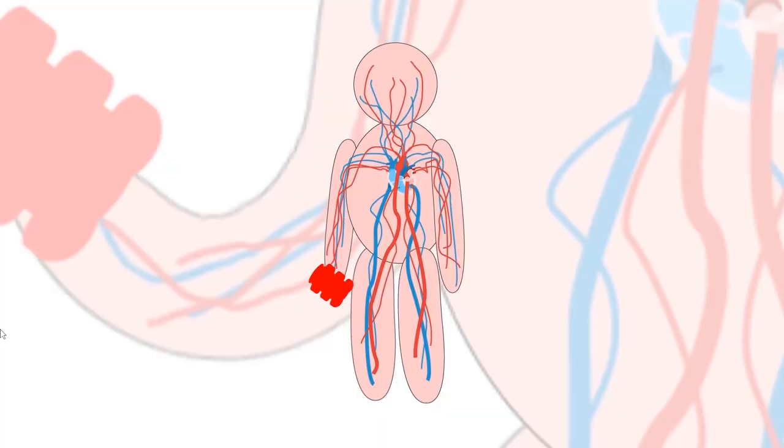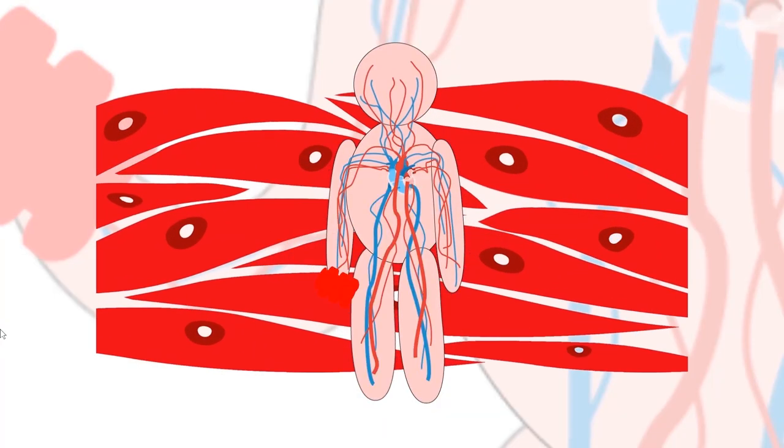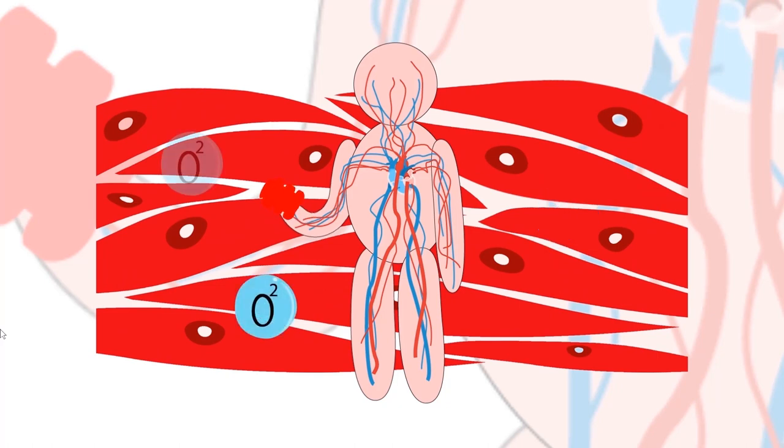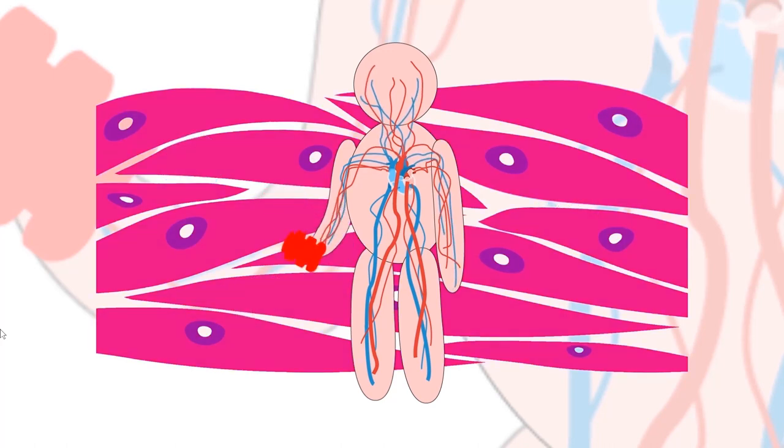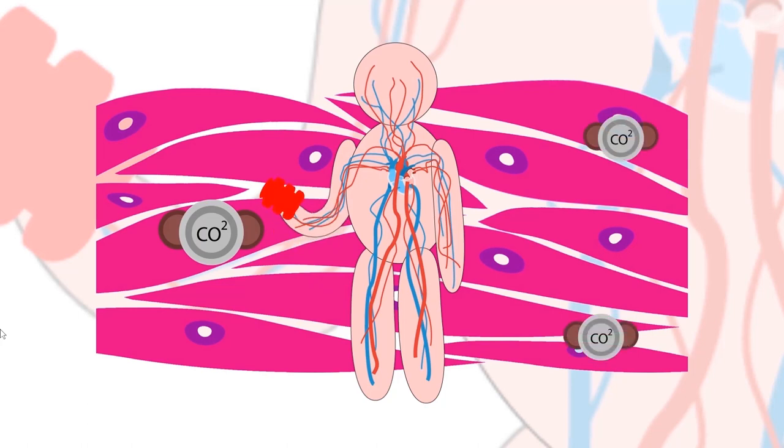The muscle, which is made up of cells, can move because of energy. Energy in the form of ATP can be made through the use of oxygen. This is through the process called cellular respiration. As a waste product of this process, carbon dioxide is produced.